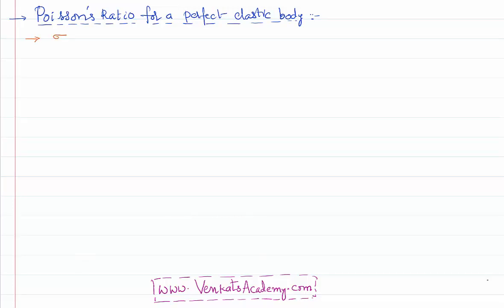Poisson's ratio is defined as the ratio of lateral strain to longitudinal strain that happens in a wire. Let us first try to understand what is the meaning of this.